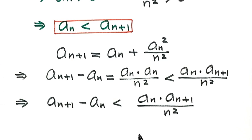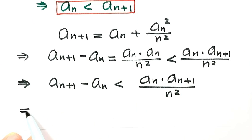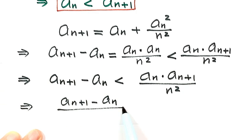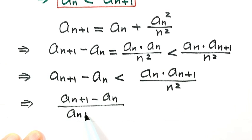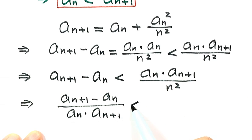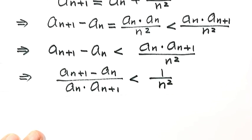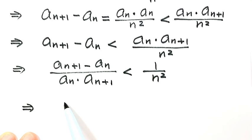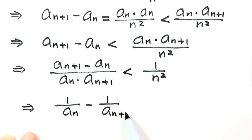Next, divide both sides by the product aₙ times aₙ₊₁. Because aₙ > 0 and aₙ₊₁ > 0, the product is bigger than 0, so the inequality sign is unchanged. We get (aₙ₊₁ minus aₙ) divided by (aₙ times aₙ₊₁) is less than 1 over n squared. Splitting this fraction and simplifying, we have 1/aₙ minus 1/aₙ₊₁ is less than 1/n².